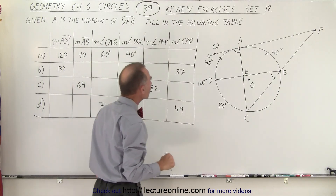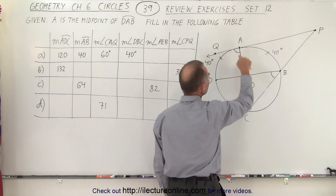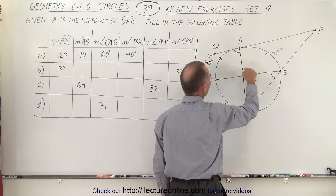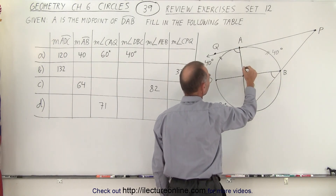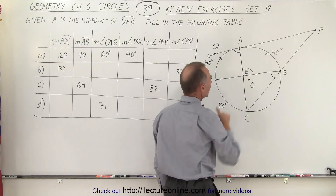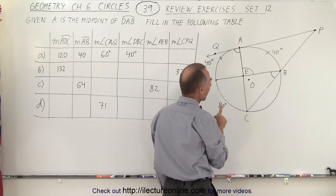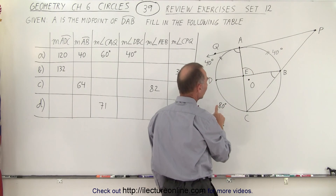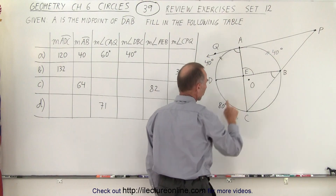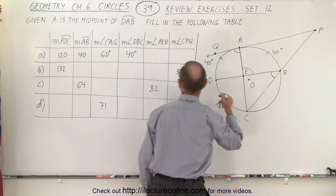Measure from A to E to B — that's this angle right here. That would be half the sum of these two. So when we add these two together we get 120. Half of that would be 60.